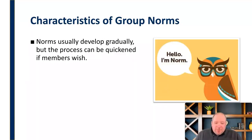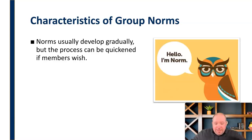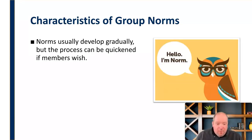Norms usually develop gradually, but the process can be quick if different members wish. Typically a norm is something that develops out of habit — a group does it once and it works, so they do it again, and slowly it just becomes the norm and the expectation. It doesn't have to occur that slowly. There are times when something abrupt happens in a group and the group will say, okay, this is how we're going to handle this in the future. So now we have a very direct establishment of a norm or rule. But usually it's just little things that happen over time gradually that become just the way things are done.